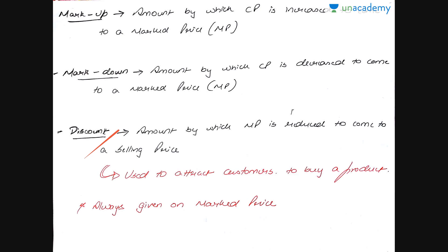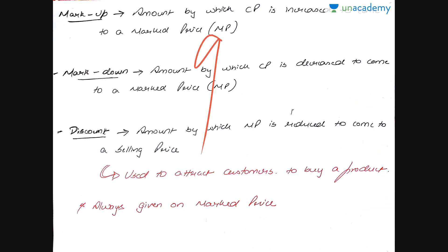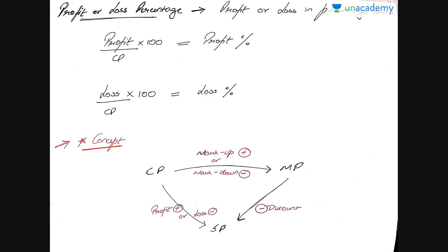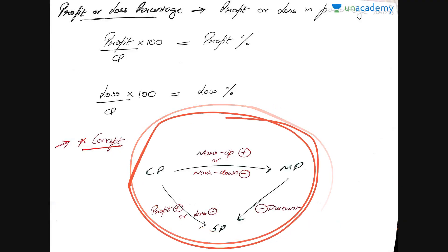Discount is the amount by which the mark price is reduced to arrive at the selling price. Discount is used to attract customers to buy a product. It is always given on the mark price, never on the selling price — because the selling price is the ultimate amount you collect from the customer. The mark price is what you advertise to the customer, but you can negotiate on that.